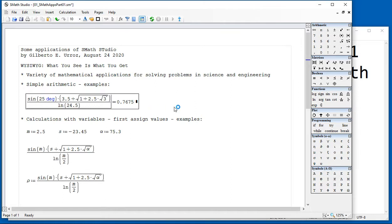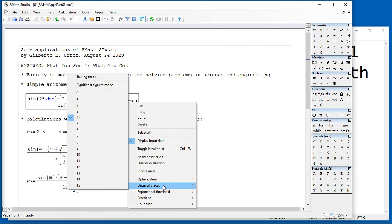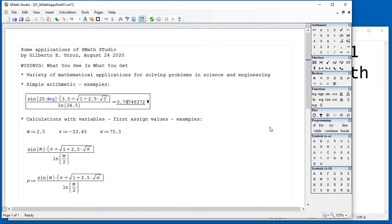By default, you get four decimals. If you want to change that, you can click on this result, do a right click on your mouse, and change the decimal places here to let's say eight to get a more expanded result.